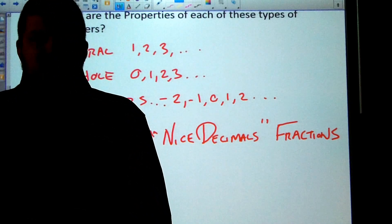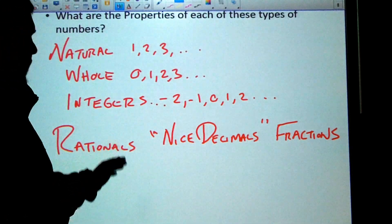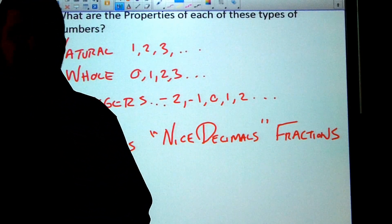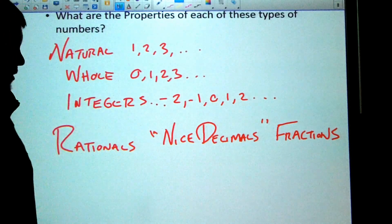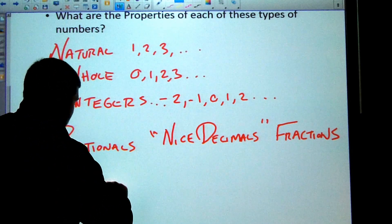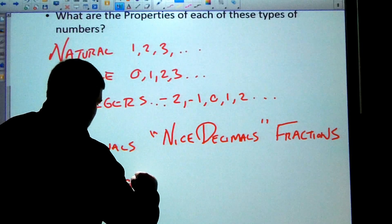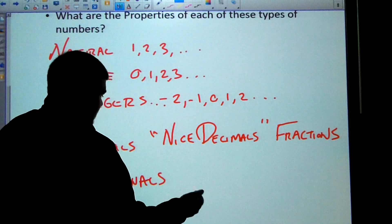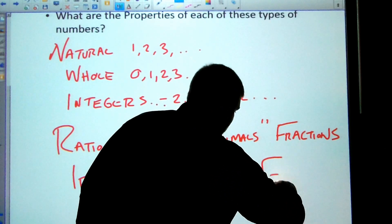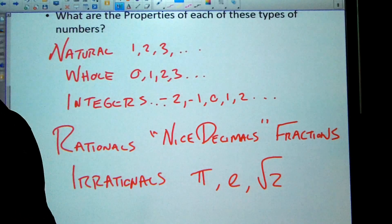And then finally the last piece of our real numbers are the irrationals, so it's things that don't behave nicely. So nasty decimals like pi or e, or square root of two. Some of those examples are pi, e, and square root of two.